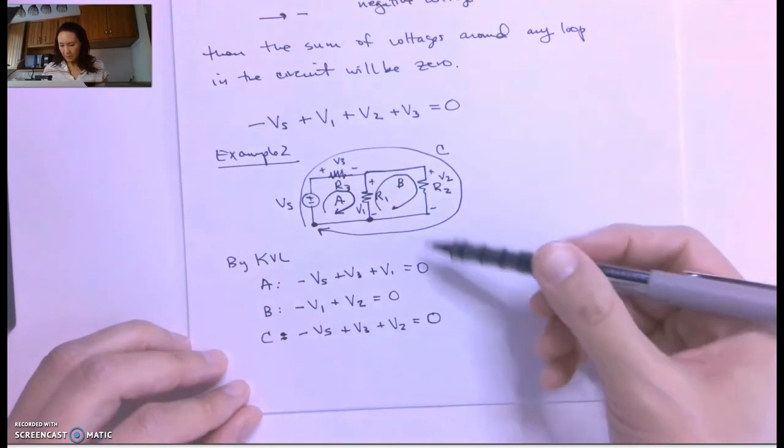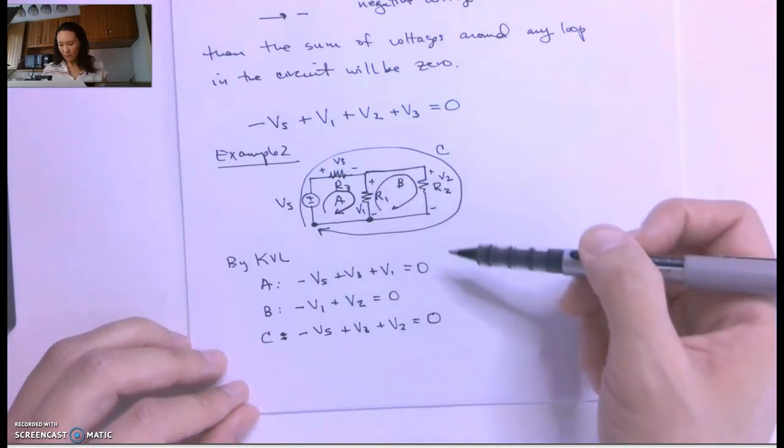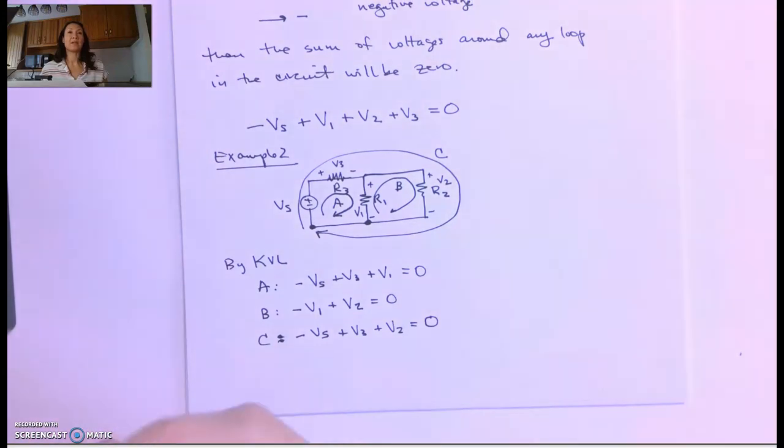So this is using KVL in all the loops in this particular circuit. We add up all the voltages and they sum to zero. But the key thing is you have to make sure to follow the passive sign convention.